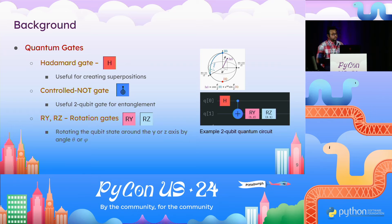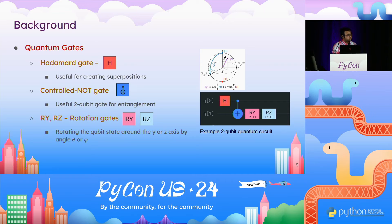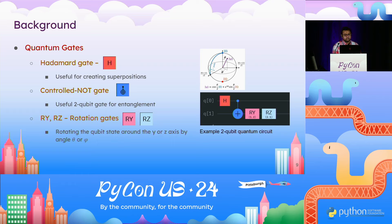Quantum gates apply transformations to quantum states by rotating the angular parameters. The Hadamard gate is used to create superpositions. The CNOT is a two-qubit gate used to entangle qubits. The RY and RZ gates are rotation gates which rotate the qubit state by angles theta and phi respectively. These are some of the useful gates used in the models we'll see next.